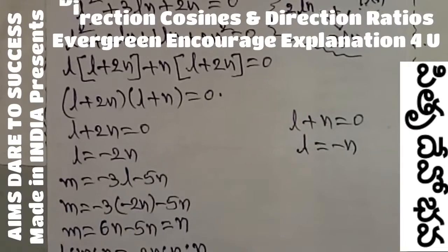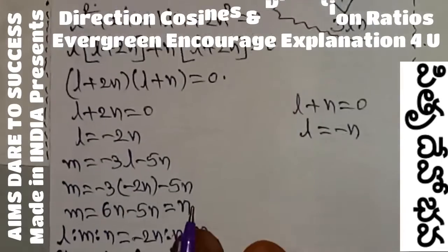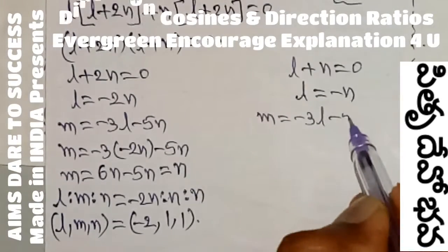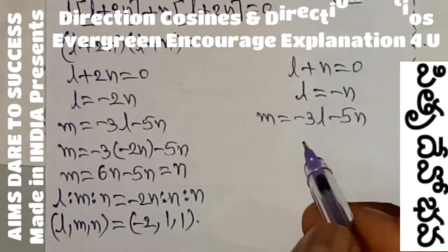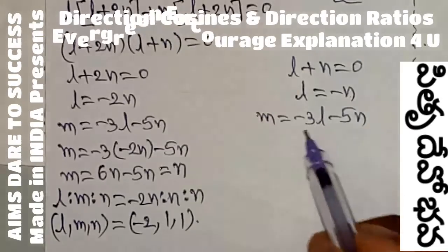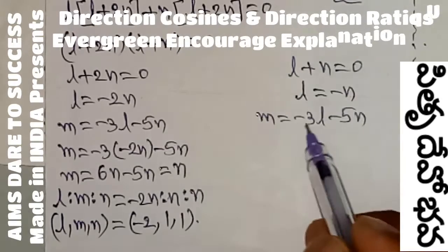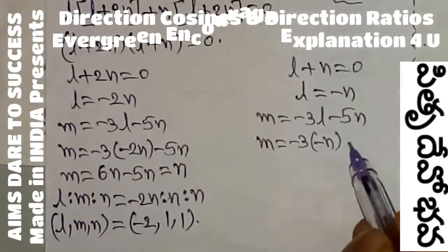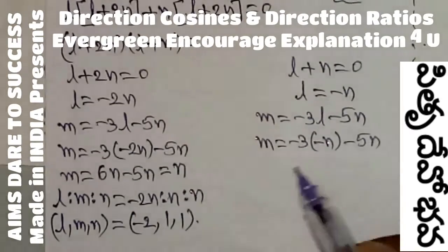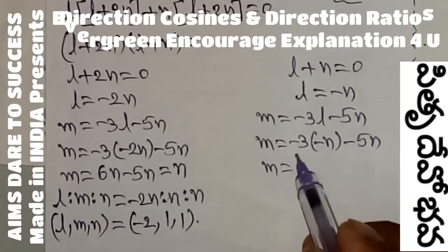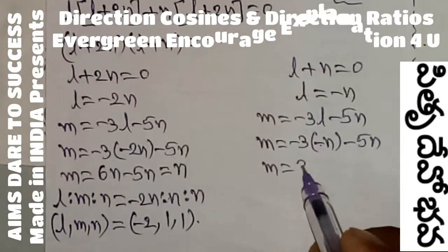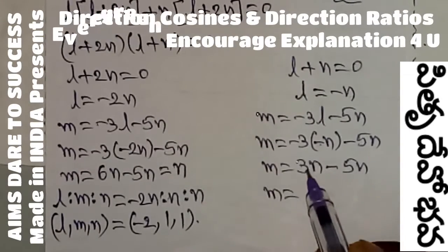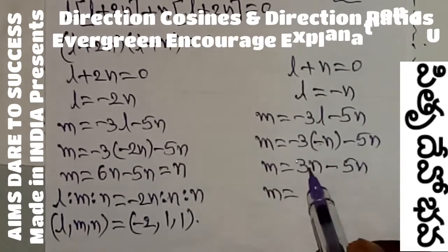Now I want to go to the second part. L equals to minus 1. Same M value here also I want to use. M is minus 3L minus 5N according to the given value. Here substituting L value as minus N, we get M equals to minus 3 into minus N, minus 5N. M equals to, after simplification, minus 3 into minus plus 3 into N is 3N minus 5N. So here M is equal to 3 minus 5.